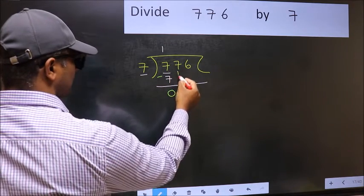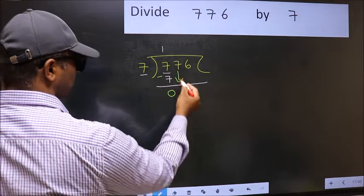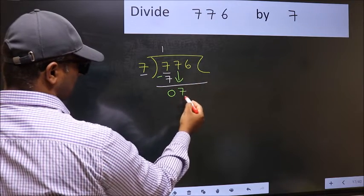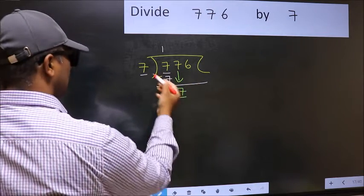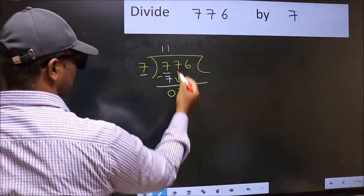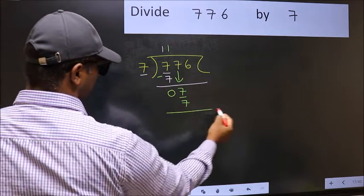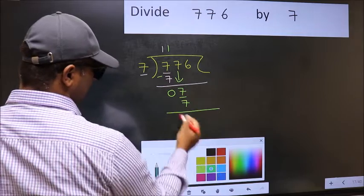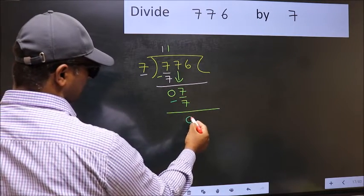After this, bring down the beside number. So 7 down. Now 7, when do we get 7 in 7 table? 7 once, 7. Now you should subtract. 7 minus 7, 0.